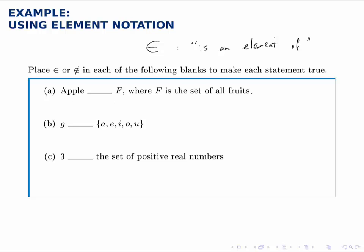So in the first example, we want to put either this symbol or the same symbol with a line through it to indicate that it's not an element of. Now, since F is a set of all fruits, an apple is a fruit, it does belong to that set. So we'll put is an element of or belongs to.